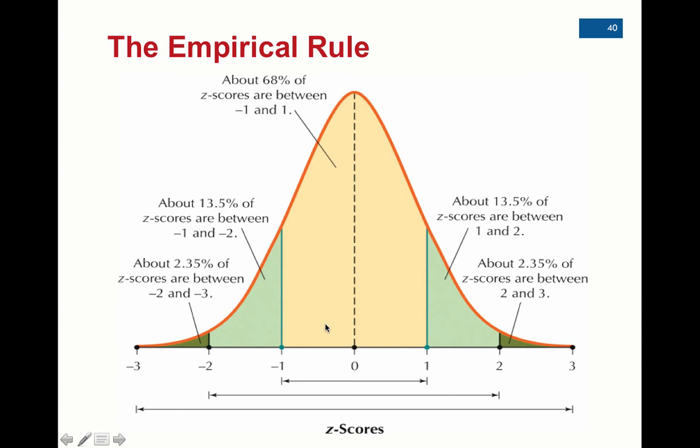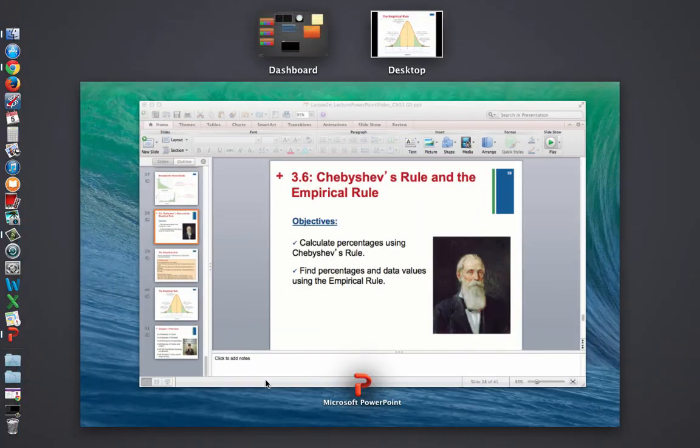So generally, we can approximate using the empirical rule data shapes that are approximately bell-shaped and have these percent approximations about what percent of the data lies within certain values. What we're going to do on our classwork is apply these percentages and these z-scores to actual data values, such as SAT scores or heights. And we're going to do that in our classwork, and we'll see you on class when we do that.